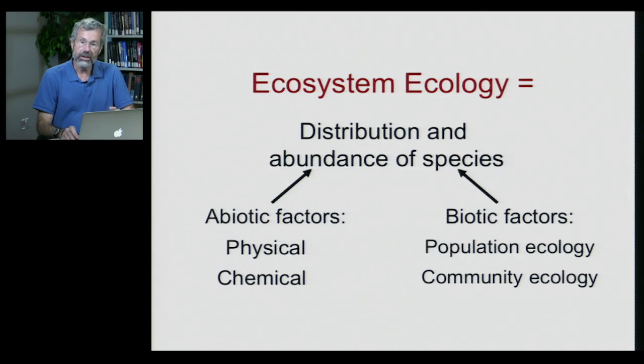Ecosystem ecology, as other fields of ecology, are interested in the distribution and abundance of species. But besides just looking at biotic factors, things that have to do with living things as we did in population ecology and community ecology, we now consider what are called abiotic factors or non-living factors. These are two types, physical and chemical. And first we'll look at physical factors.